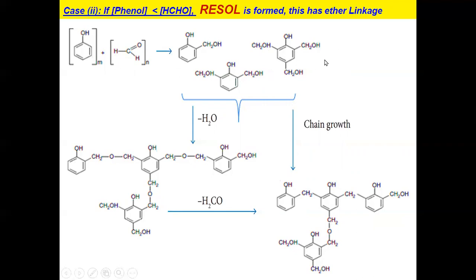These intermediates undergo condensation polymerization. The CH2OH groups undergo condensation: H of one group and OH of another combine, resulting in the formation of water. Therefore, a CH2–O–CH2 (ether) linkage forms. This is the key structural difference from novolac: in novolac, CH2OH reacts with hydrogen giving a methylene linkage, but here CH2OH reacts with another CH2OH giving an ether linkage. That is the structural difference between novolac and Resol.